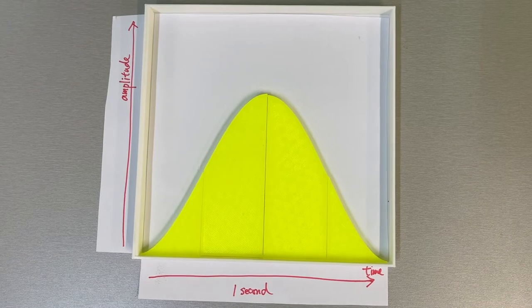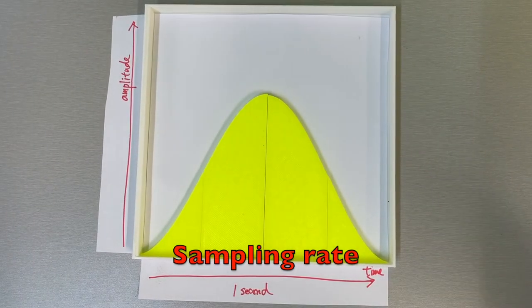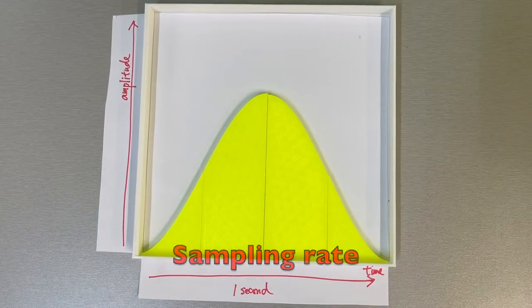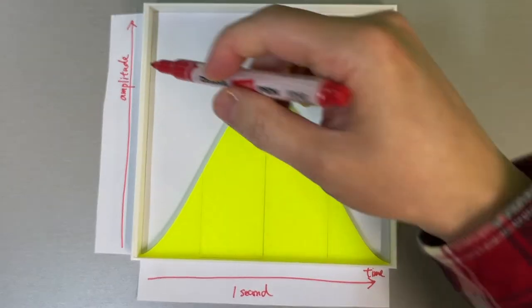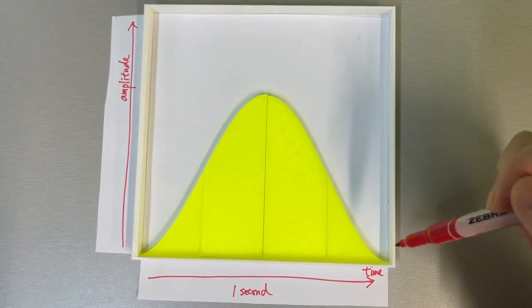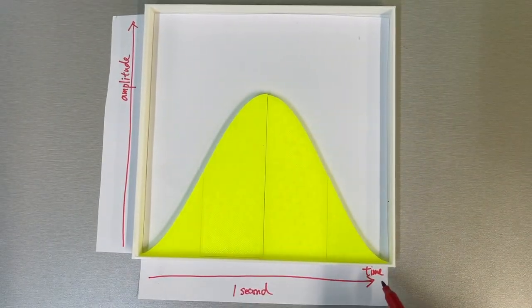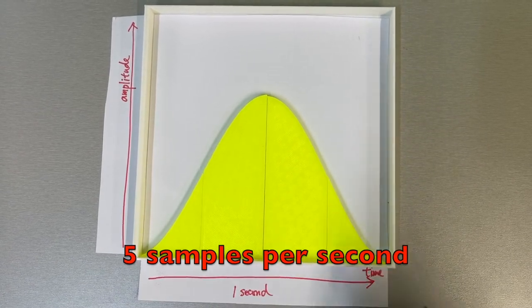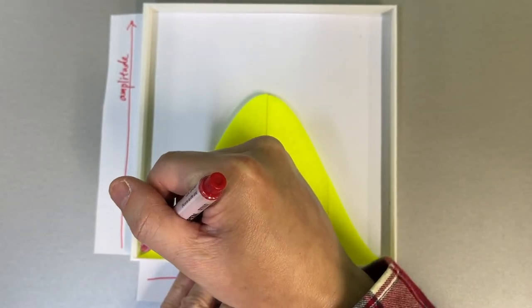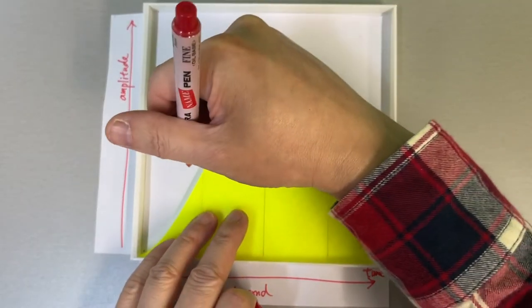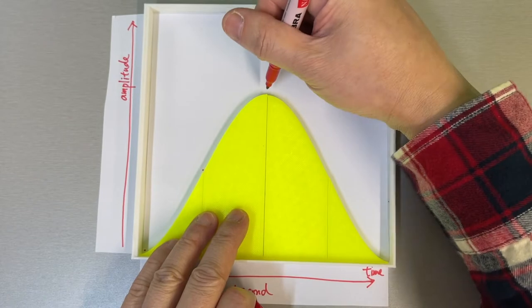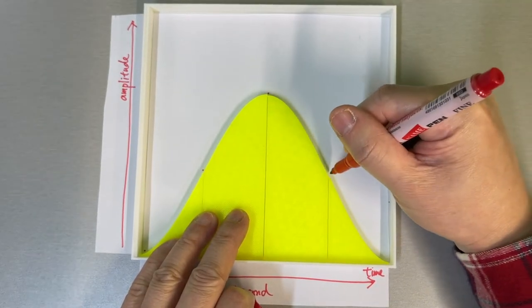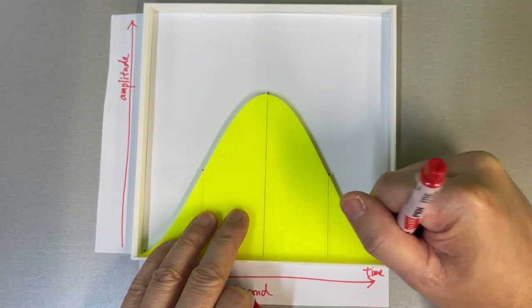So first of all, we have a concept called sampling rate or sampling frequency. We have to take samples of the amplitude along this waveform across the time axis. And suppose we take five samples in one second. So this will be the first sample. And this will be the second one. This is the third one. This is the fourth one. And this is the last one.